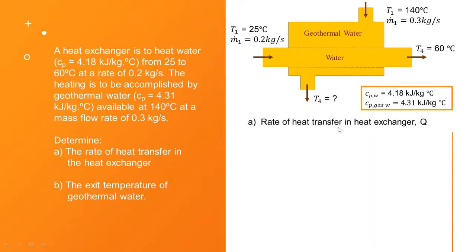The rate of heat transfer in heat exchanger, Q, is equal to the heat gained by the water, and is also equal to the heat lost by the geothermal water. The heat gained by the water is equal to m·Cp·ΔT, where m is the mass flow rate, Cp is the specific heat capacity, and ΔT is the temperature difference. M here is 0.2, Cp is 4.18, and the difference in temperature is 60 minus 25. And we got the answer here is 29.26 kJ per second.